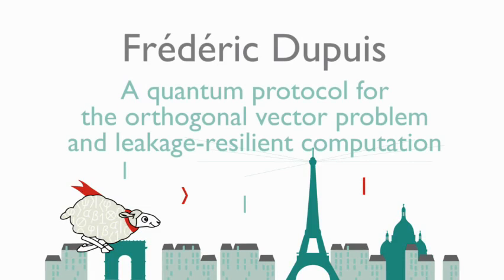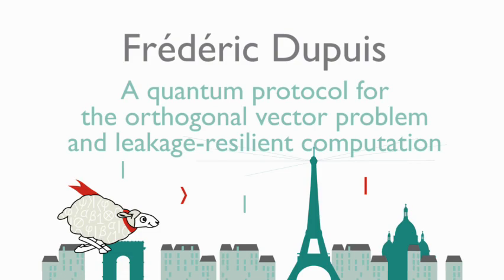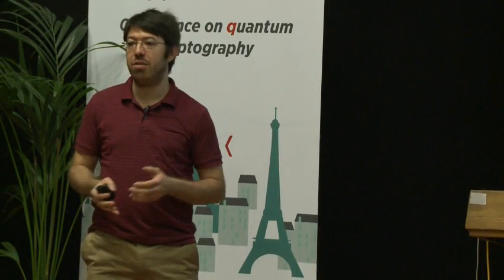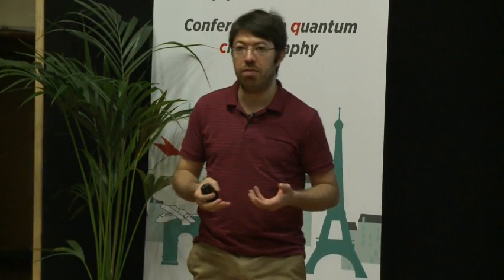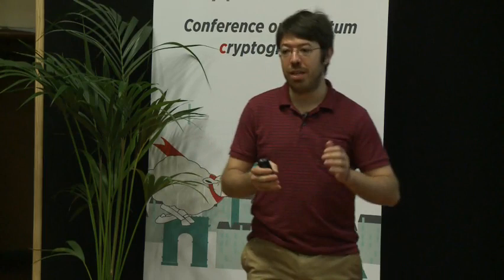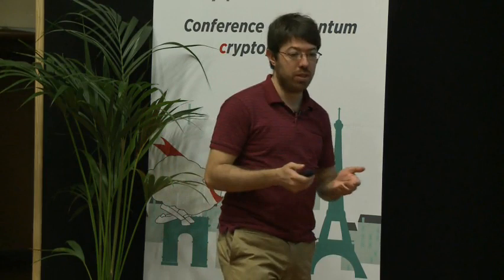I'll be talking about the quantum protocol for the orthogonal vector problem and leakage-resilient computation. This is joint work with Ivan Damgaard and Jasper Boosnitsen in Aarhus. Here's a rough outline of my talk: first I'll talk about what leakage resilience is and how it's treated in modern cryptography. Then I'll talk about the split-state model, which leads to something we call the orthogonal vector problem. Then I'll show how we can solve this with a quantum protocol.